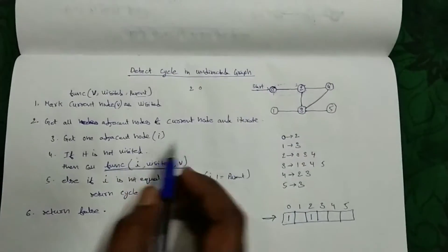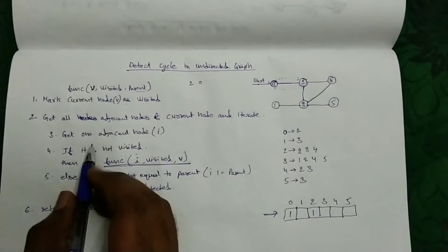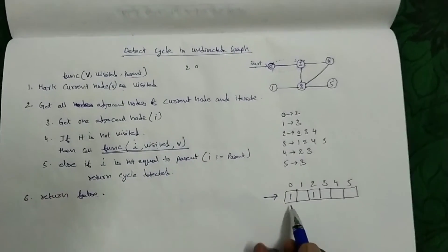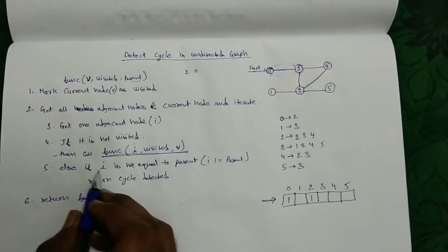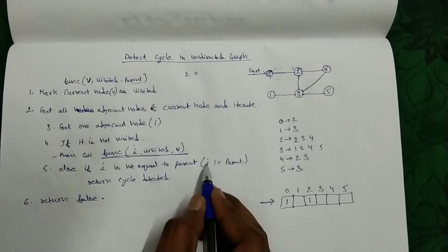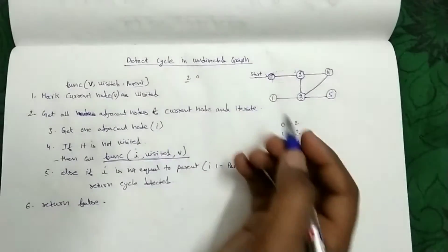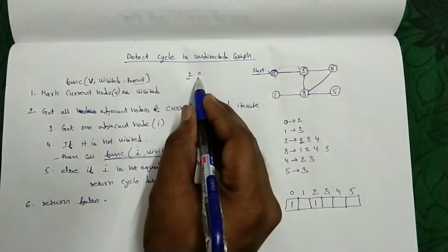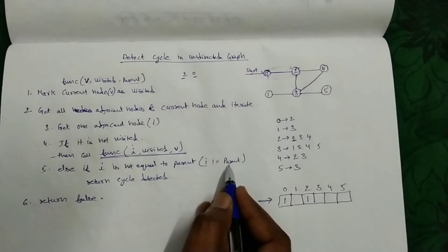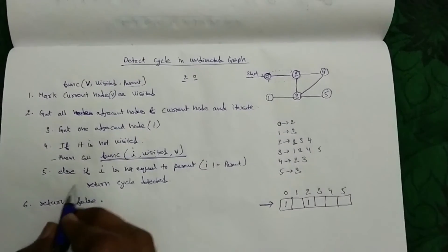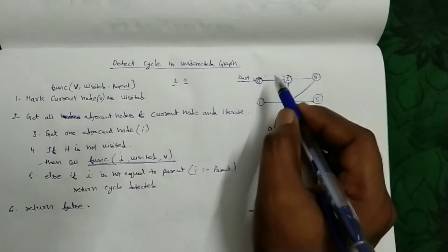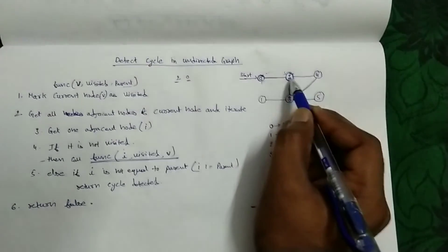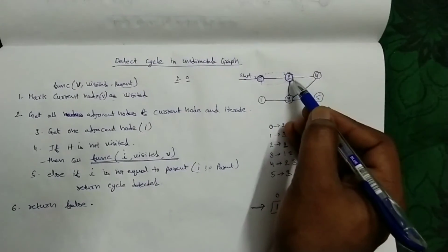Now we got 2's adjacency nodes. We get adjacency node 0 and check whether 0 is visited or not. 0 is already visited, so we won't enter the if case. We go to the else case and check if i is not equal to parent. Here i is 0 and parent is also 0 — they are equal. So we won't return cycle detected; it will return false. The main concept is: we came from 0 to 2 and we are trying to go from 2 back to 0, but 0 is the parent of 2 and already visited, so it doesn't matter — there is no cycle.